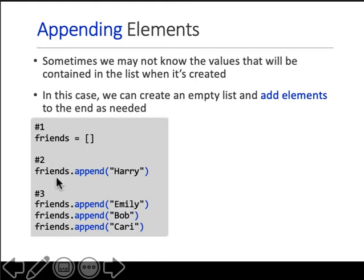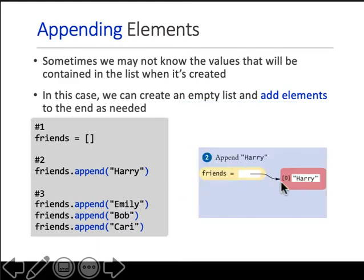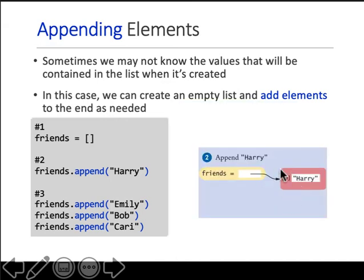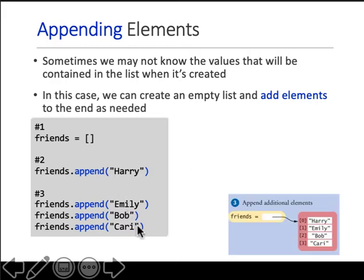This line appends a member to the list. So friends was an empty list, and the first member is Harry. Append Emily to the same list, append Bob, and so on. Harry, Emily, Bob, Carrie are now members of that list which is now populated. Then you append Harry to that empty list, so now you have index 0 as Harry, index 1 is Emily, index 2 is Bob, index 3 is Carrie.